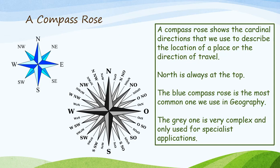A compass rose is what you're more likely to see on a map. A compass rose shows the cardinal directions that we use to describe the location of a place or the direction of travel. North is always at the top. The blue compass rose is the most common one used in geography, while the grey one is very complex and really only used for specialist applications.